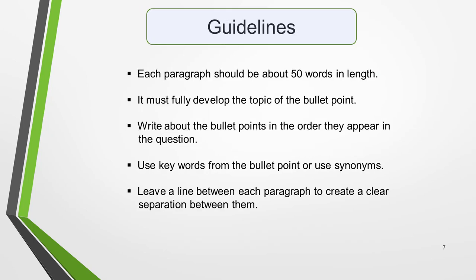Now for the three main paragraphs — use the letter structure and these guidelines. Each paragraph should be about 50 words in length. It must fully develop the topic of the bullet point. Write about the bullet points in the order they appear in the question. Use keywords from the bullet point or use synonyms that make it clear which bullet point you're writing about. Finally, leave a line between each paragraph to create a clear separation between them.